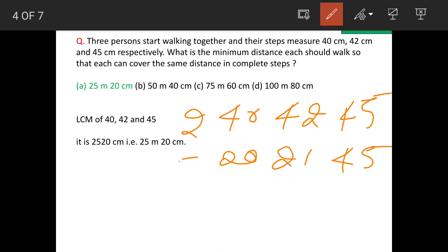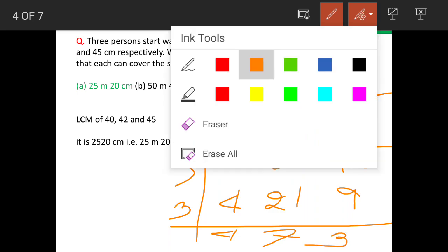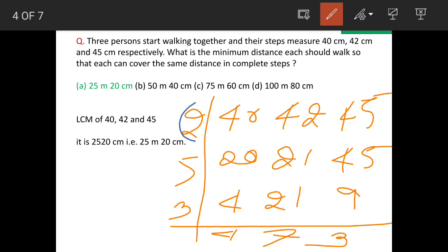Now, next divisible factor is 5. So it becomes 4, 21 and 9, and then we divide it by 3. We get 4 here, we get 7 here and we get 3 here. Now, when we multiply these numbers, 2 into 5 into 3 into 4 into 7 into 3, we will get result as 2520.